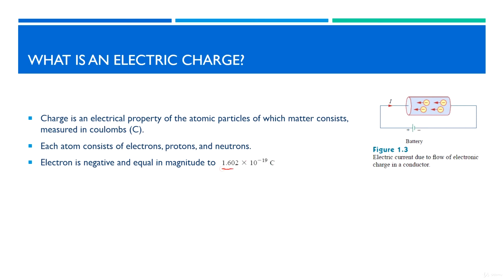The electron, for example, is a negative charge and its magnitude is equal to 1.602 × 10⁻¹⁹ coulombs. This is equivalent to one electron. Now we need to understand the benefit of electric charges. Here we have our battery, or our source of electricity. This battery has two terminals.